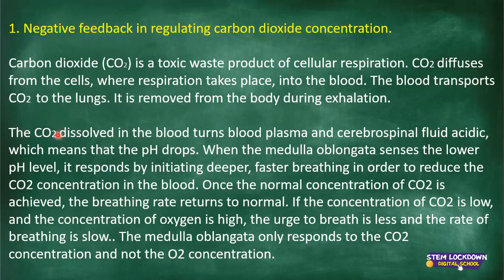Carbon dioxide binds with water — you'll remember from Grade 11 the various ways carbon dioxide is transported in the body. One way is that carbon dioxide binds with water to form bicarbonate acid plus the hydrogen ion. It can also form carbonic acid. Because of those properties, they change the blood plasma, making it acidic, meaning they lower the pH level in the blood.